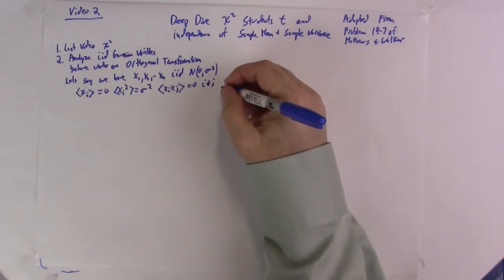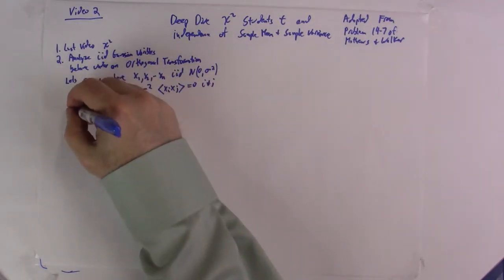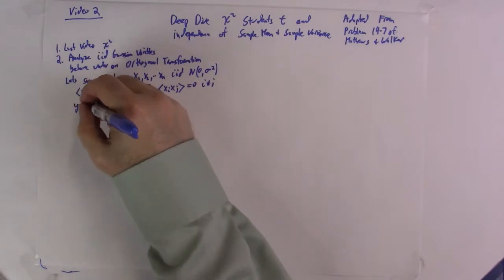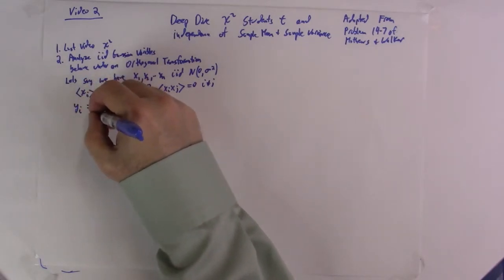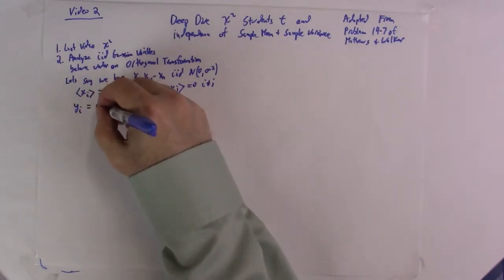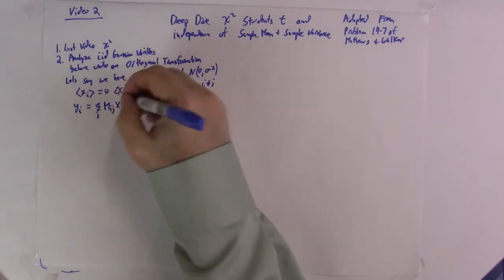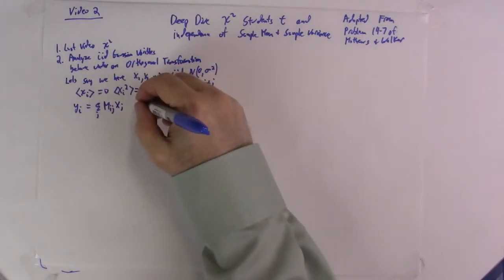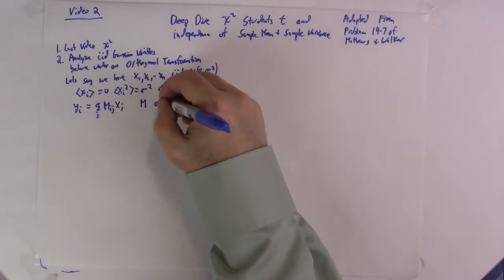And let's say we have an orthogonal transformation defined by yi equals the sum over j of M_ij times xj. So M will be an orthogonal matrix.